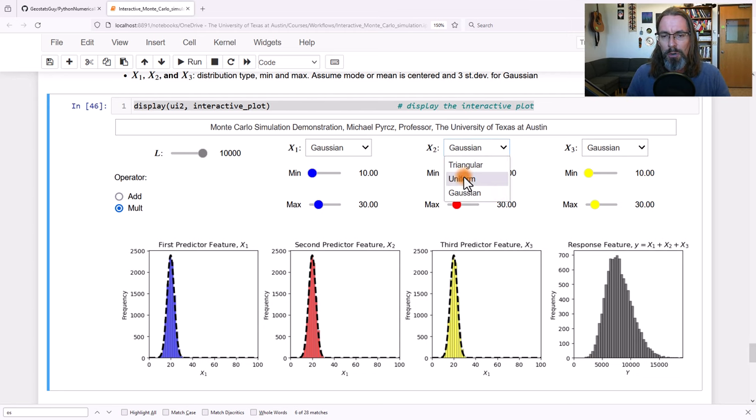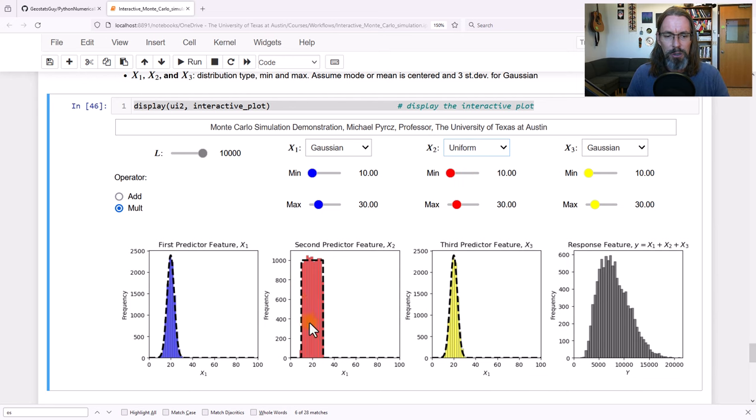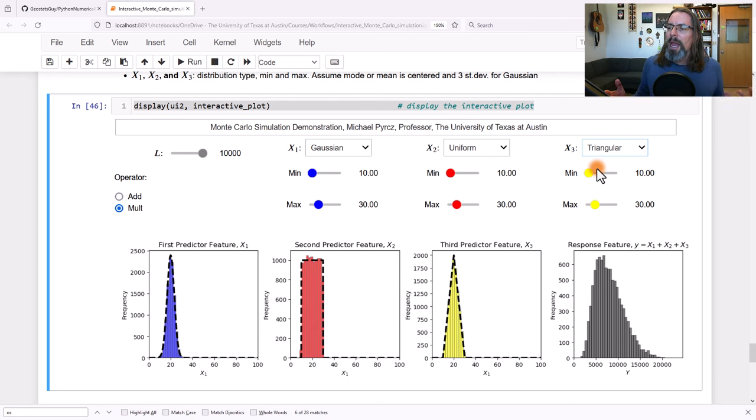Of course, you could do this for all generality. What if you change this to uniformly distributed for x2, and x3, we make that triangular. You see, we could do any math with Monte Carlo simulation. We're not in any way constrained. We just have to draw from each one of them, apply them to the transfer function, observe the outcomes.